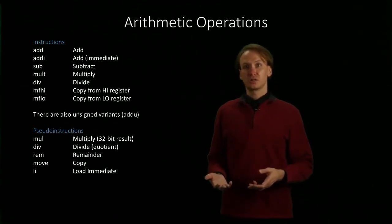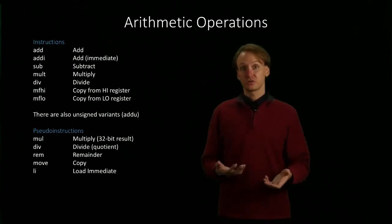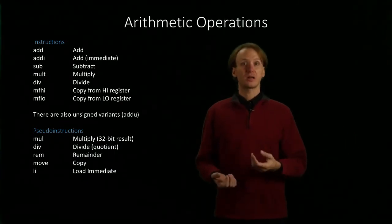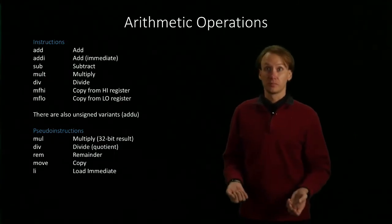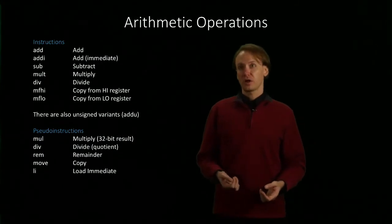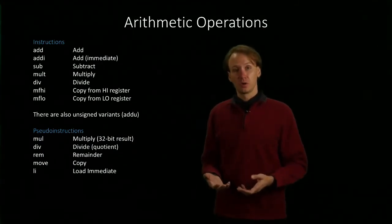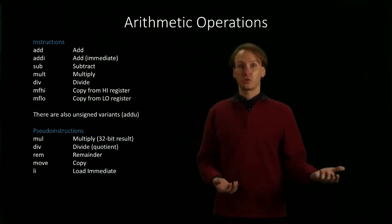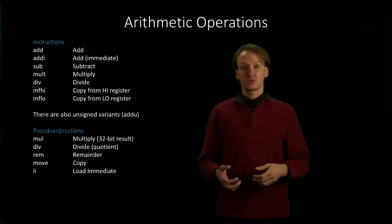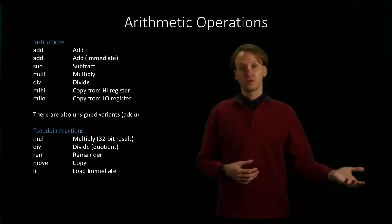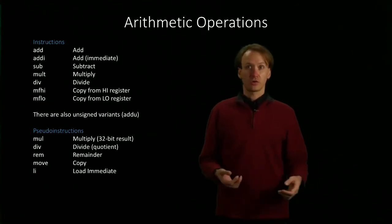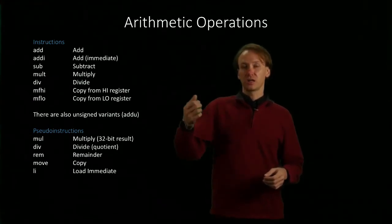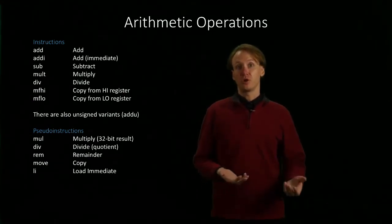The div pseudo instruction is similar. It's going to do the integer division, and it will take the quotient from the low register and store that into an output register for you. On the other hand, the remainder pseudo instruction would do the integer division, and then take the remainder from the high register and store it into an output. That can be useful in those cases where you're only interested in either the quotient or the remainder. If you're interested in both of them, you probably still want to use the regular div instruction, and then just follow that up with a move from high and a move from low.